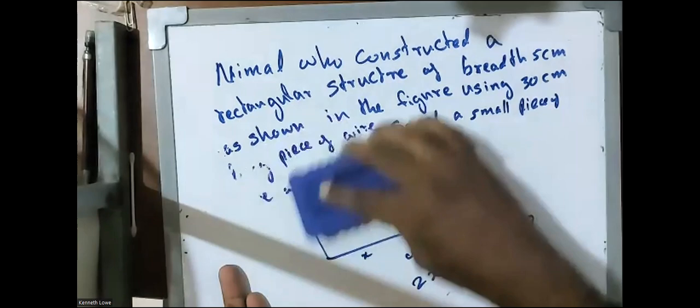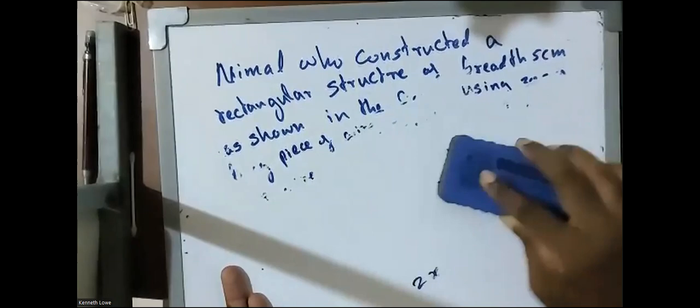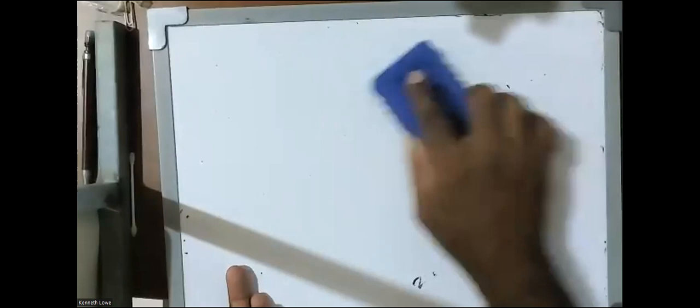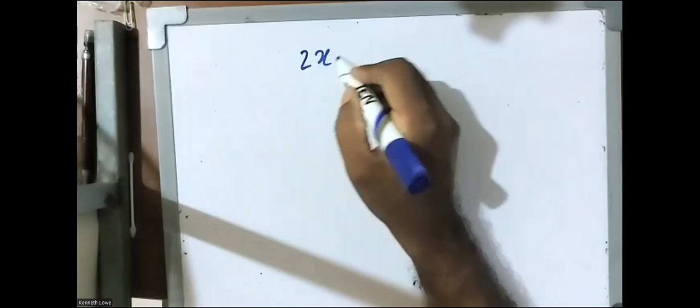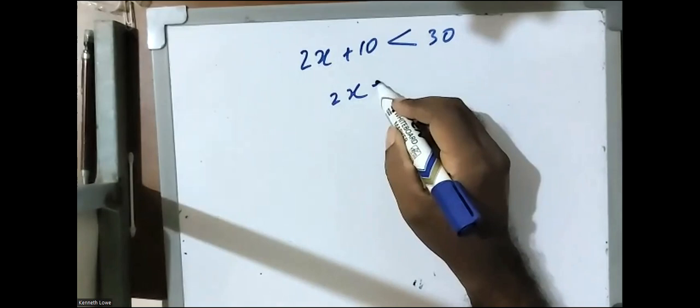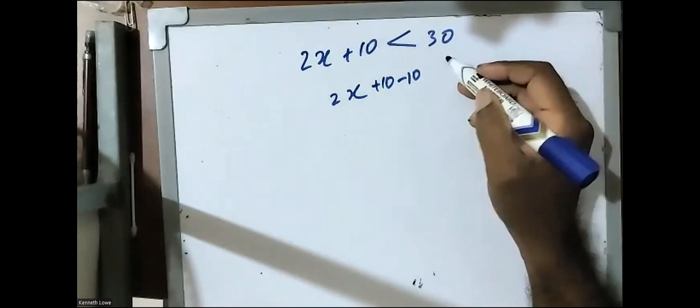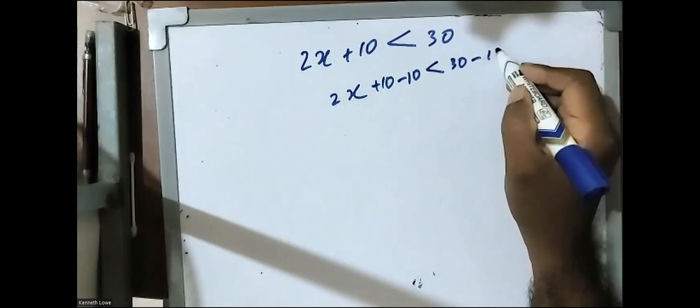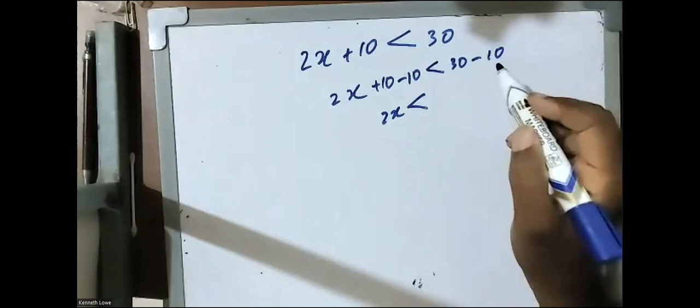Then we solve this one. 2x plus 10 less than 30. 2x plus 10 subtract 10 by both sides, 10 minus 10, 30 minus 10. 2x less than 20.